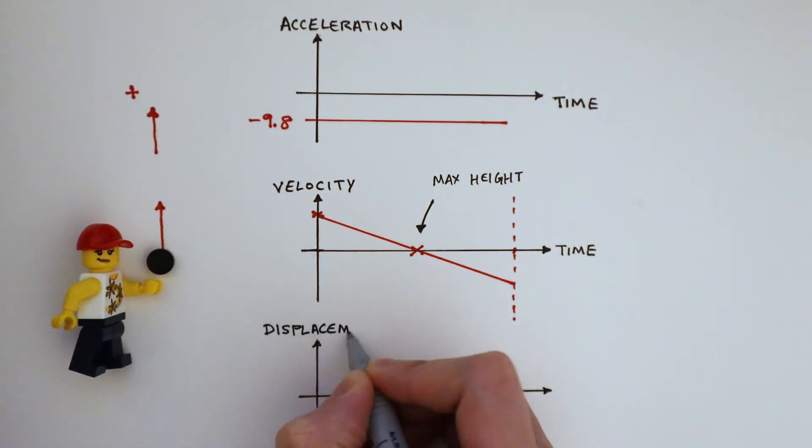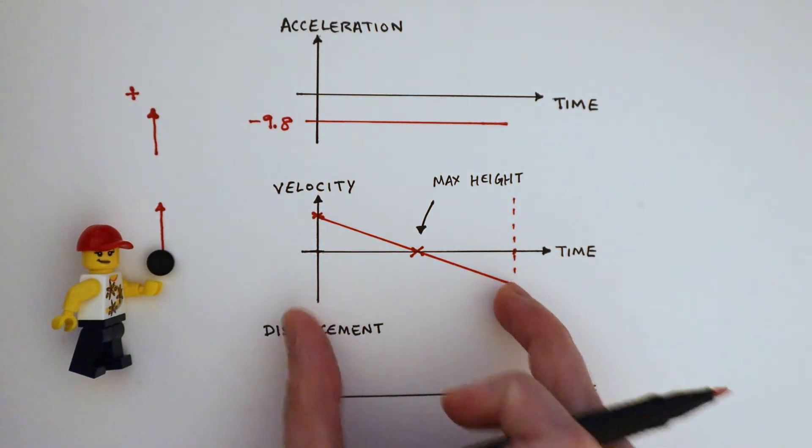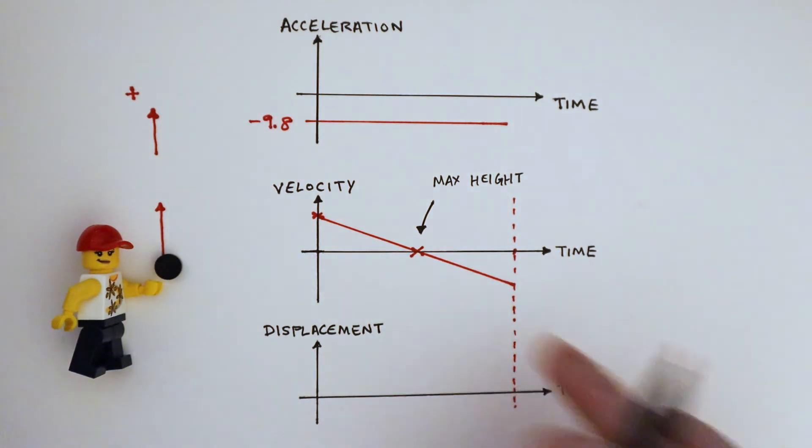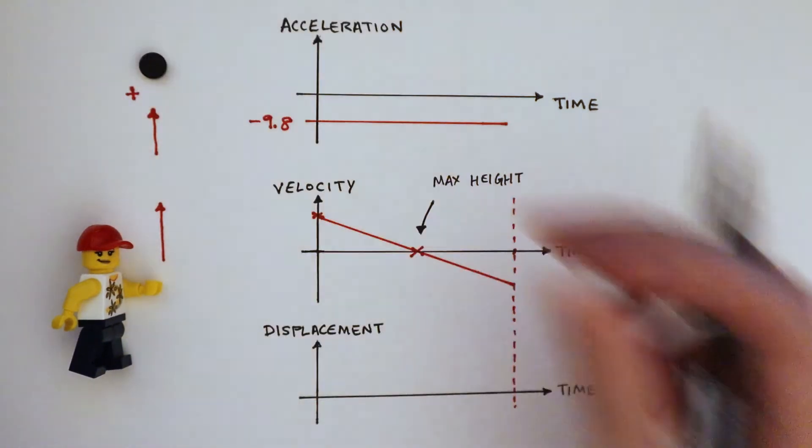For displacement time graph, the time of flight must be the same as our velocity time graph, so the graph ends here. Its maximum height is when velocity is zero, right at the top of its trajectory.